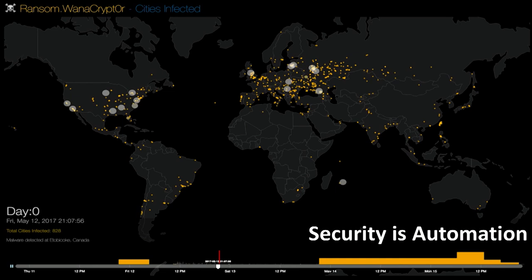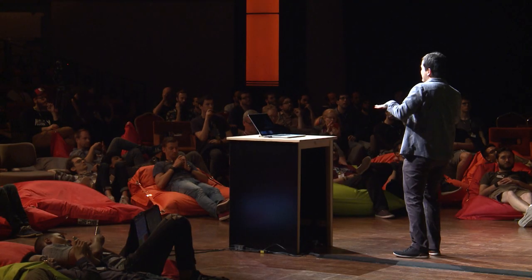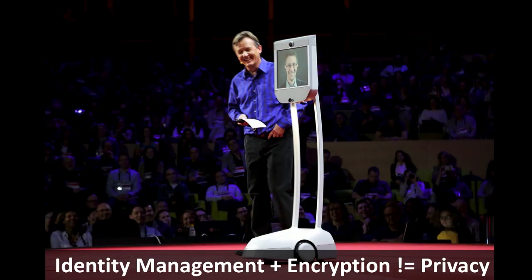Starting with security, I want to talk about the most important things customers are doing in this area. Security automation is first and foremost. Today there is no lone hacker figure attacking systems — it's an automation battle. When WannaCry devastated the internet last year, it was four days, and in the first day there were more than 300,000 infections. Getting security right is extremely difficult.